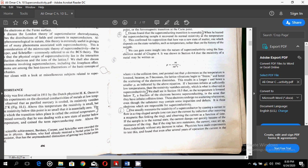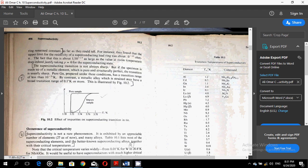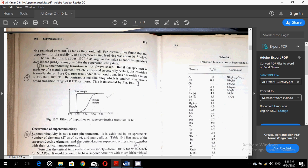Physicists have made experiments to test this and found that even after several years of observation, the current in the ring remained constant as far as they could tell. For instance, they found that the upper limit for the resistivity of a superconducting lead ring was about 10 to the power minus 25 ohms into meter.